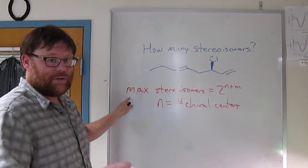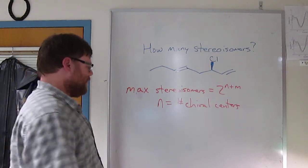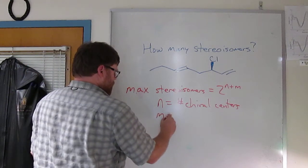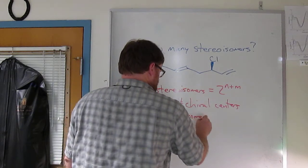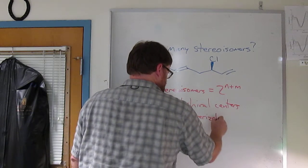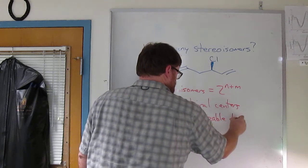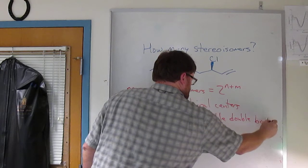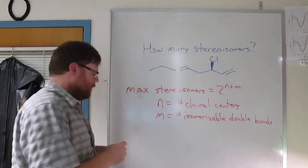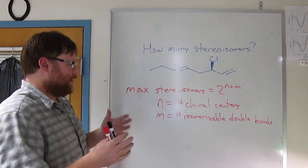So the equation in the book is 2 to the n, where n is the number of chiral centers. I ask you to throw in the number of isomerizable double bonds, which is m, so 2 to the n plus m.